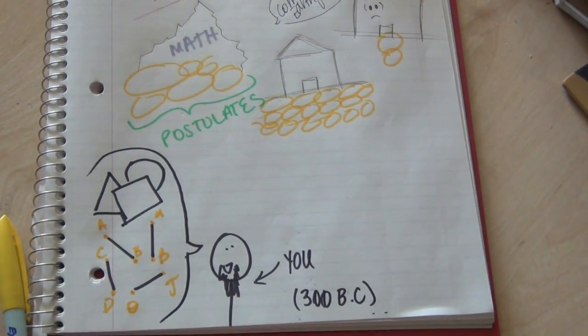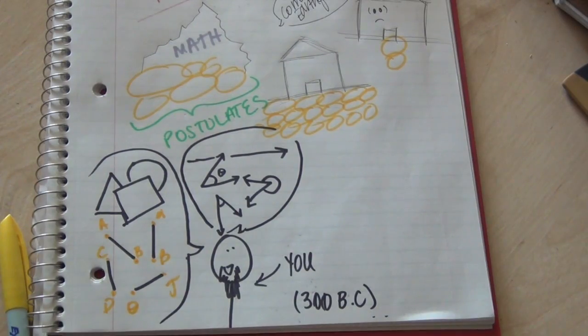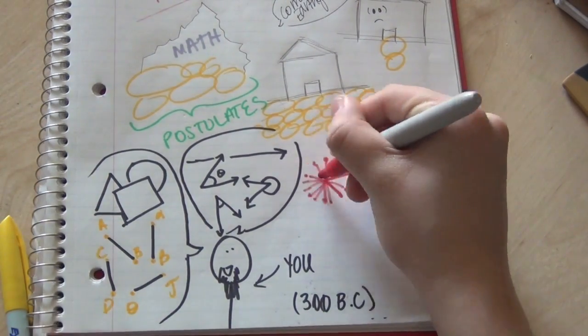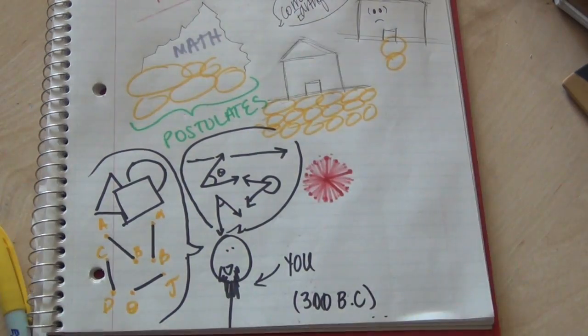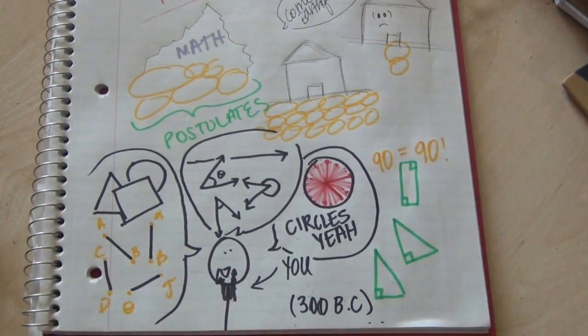Now you also know that angles extend forever if you don't stop them, so you might as well call those indefinite segments lines. And also, with any segment you can make a circle. And all right angles are congruent, because 90 equals 90 whether you like it or not. And there you go, you've got the first four of Euclid's five postulates.